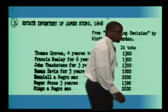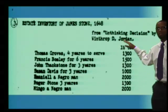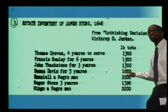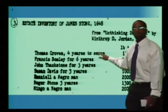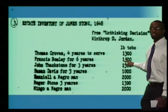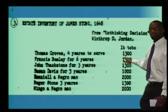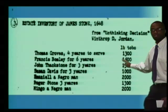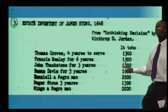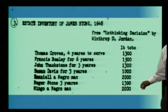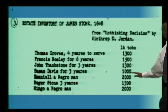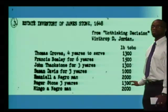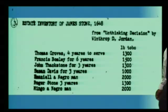Looking at the document again, do we notice any differences in the list and how much people are worth? One thing that stands out is that the numbers are different. 1,300 for Thomas Groves, four years to serve. 1,500 for Francis Bailey, six years to serve. Maybe their worth is based on years left to serve. But four years and three years are both 1,300 — so maybe John Thackstone was a little stronger than Thomas Groves. Susan Davis, three years at 1,000 — maybe it's because she's a woman. Emmanuel, a Negro man: 2,000. Roger Stone, three years: 1,300. Mingo, a Negro man: 2,000.